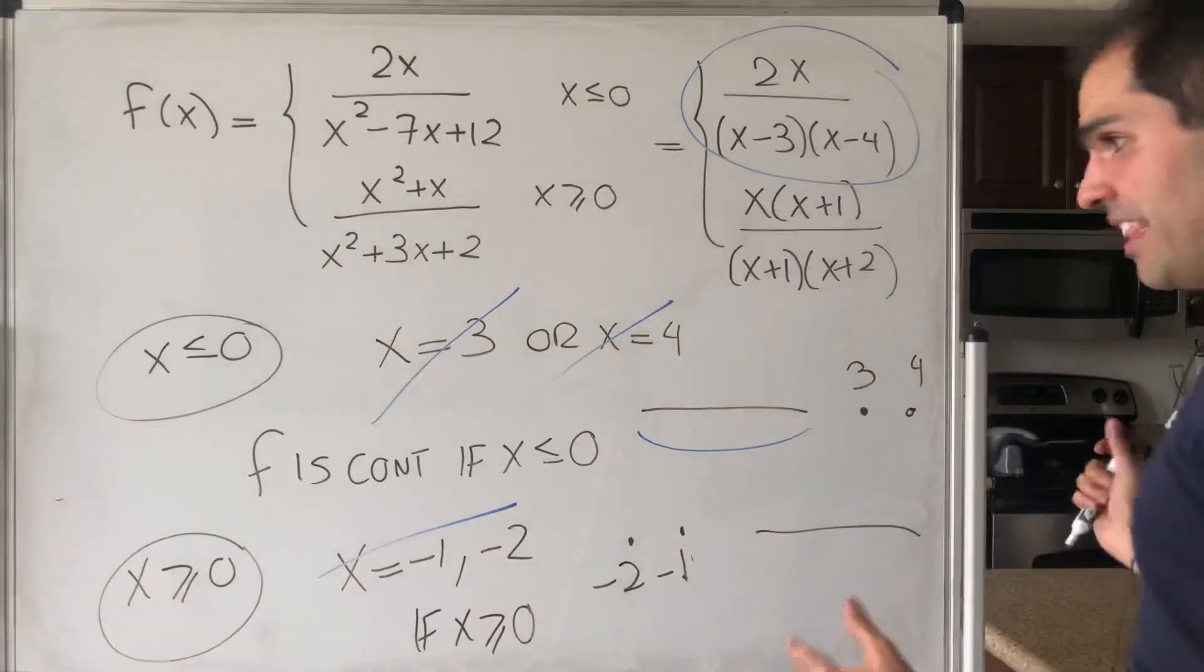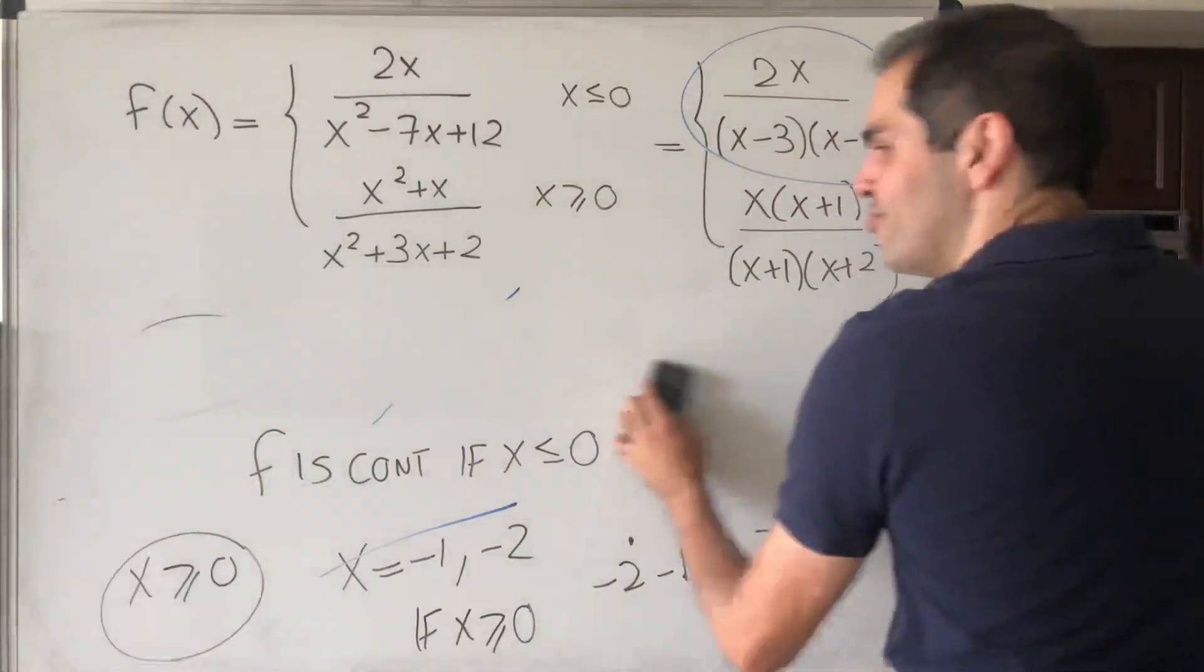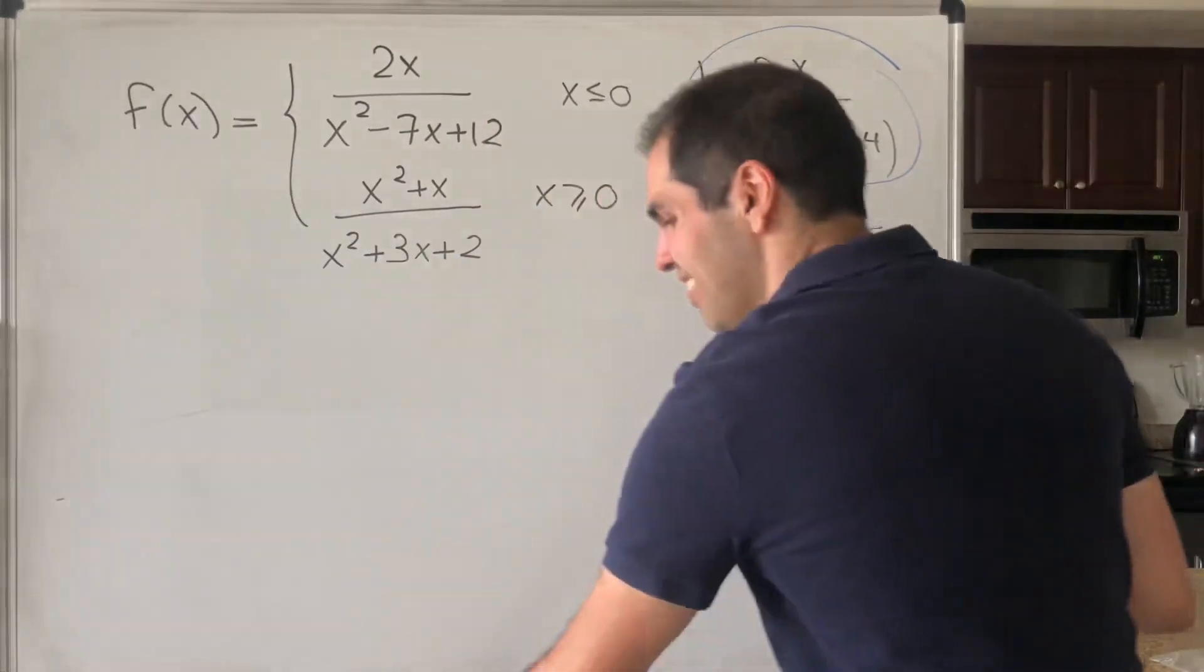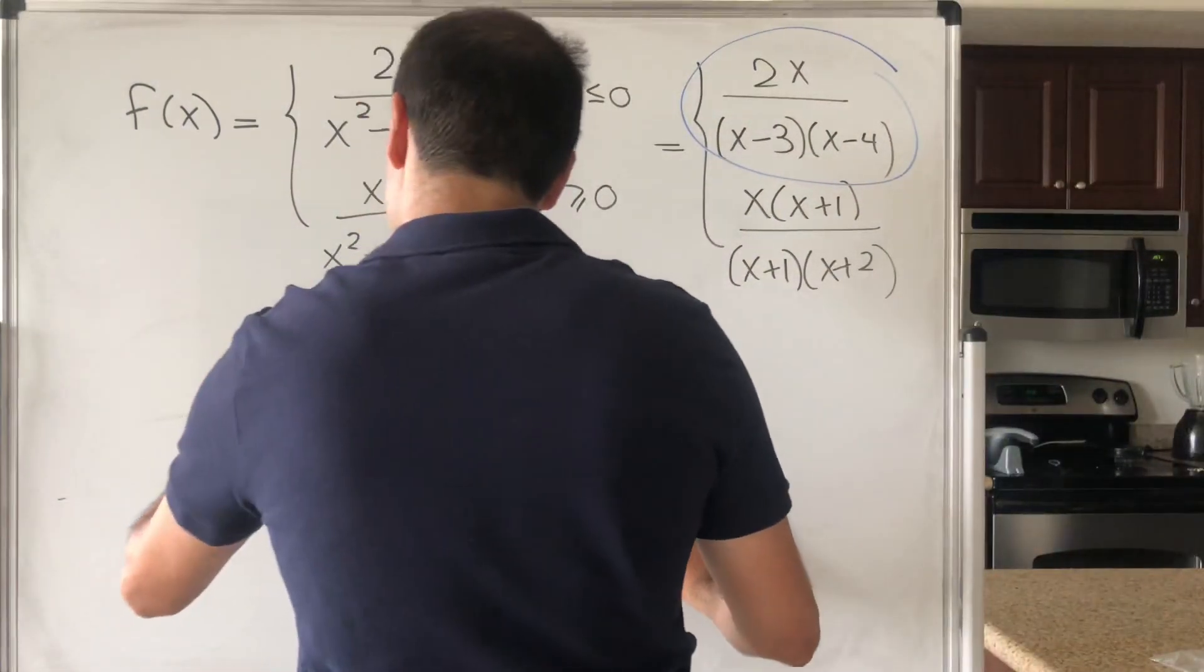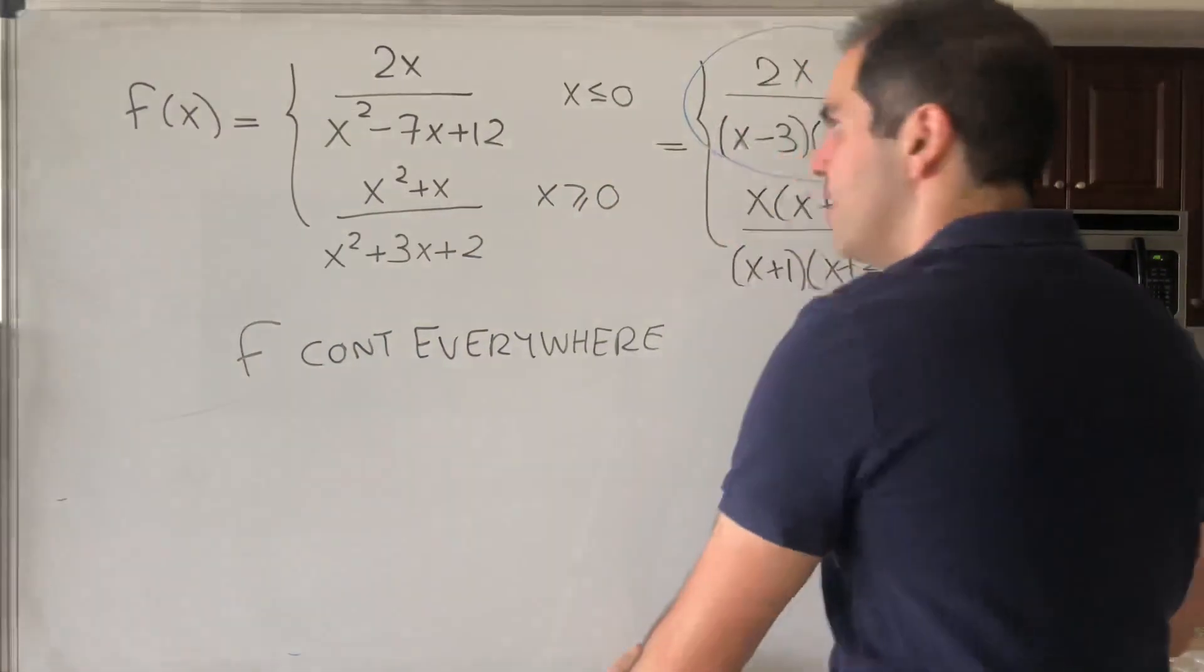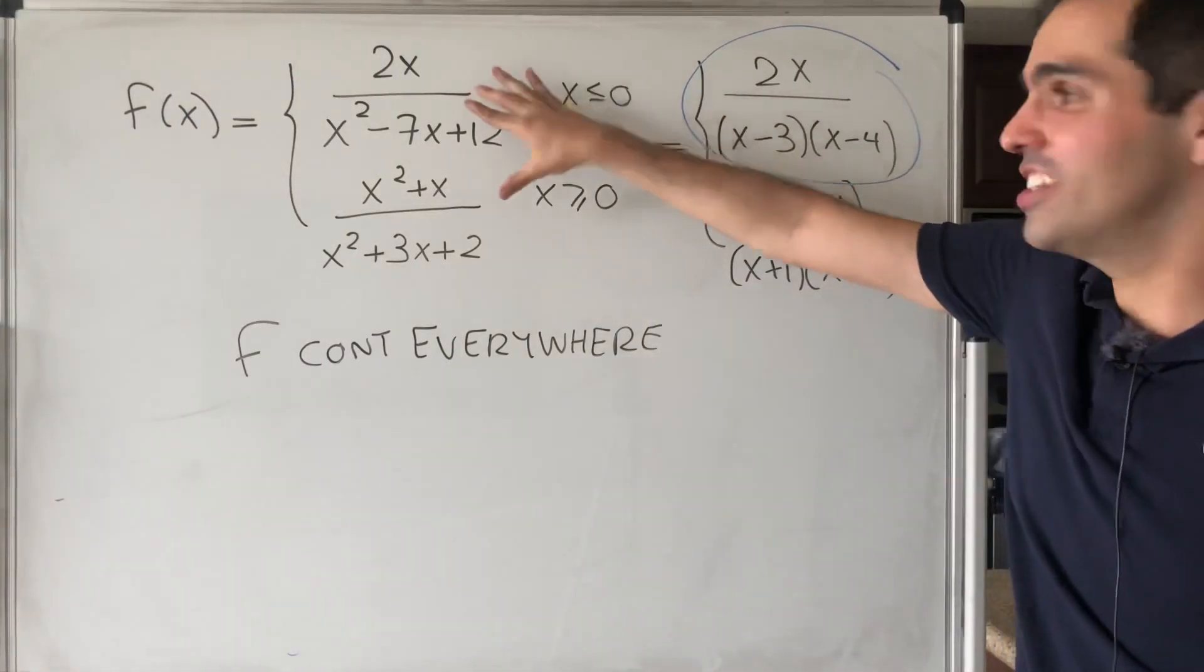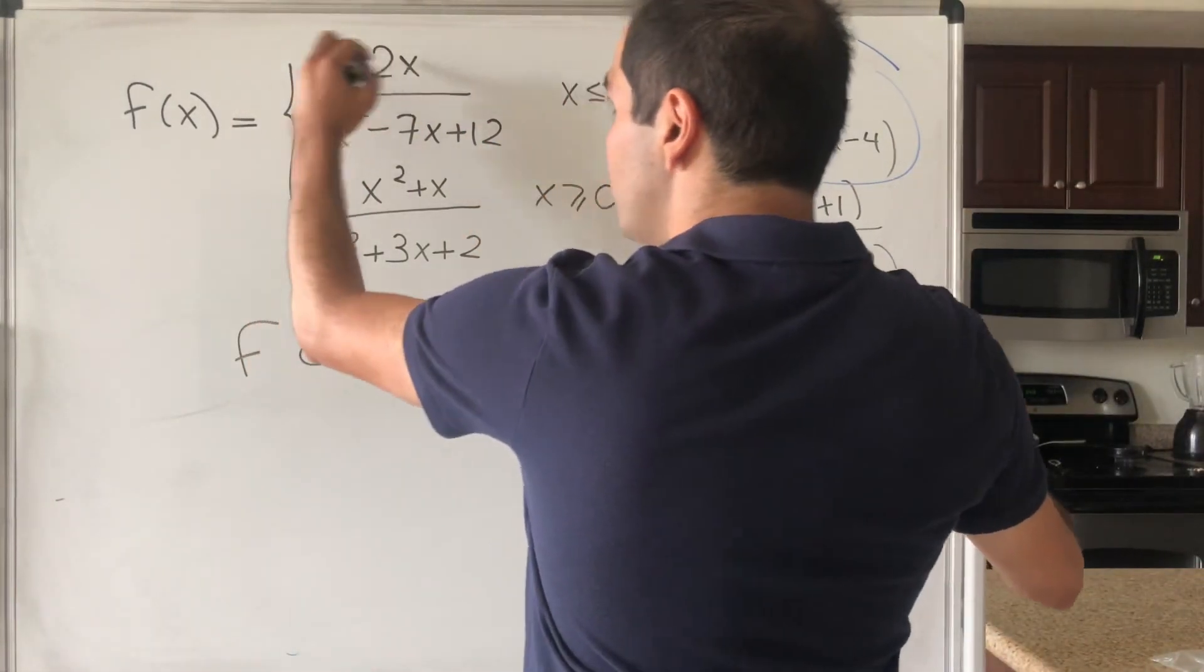And so in the end, what can we conclude? It turns out that this freaky function is actually continuous everywhere. Did you guess that? Maybe or maybe not. And again, this is very interesting, because each of those functions technically is discontinuous, but at different parts of the domain.